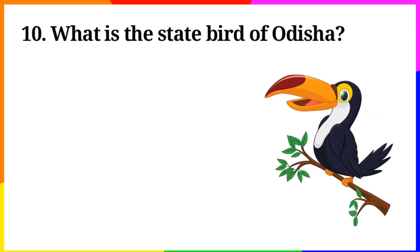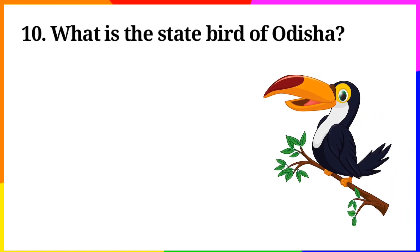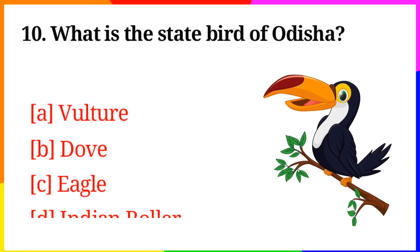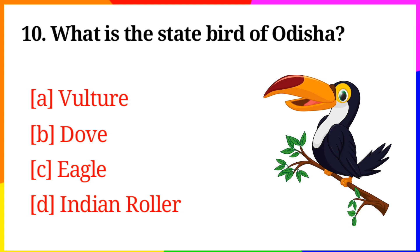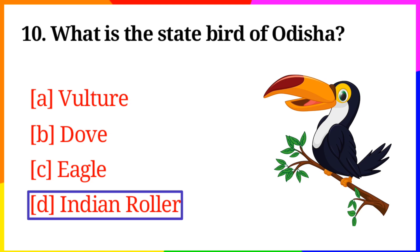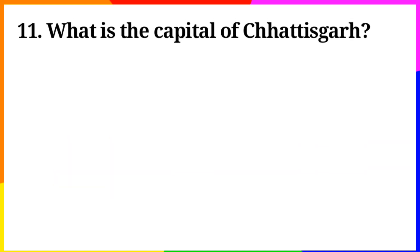Question No. 10: What is the state bird of Odisha? Option A: Vulture, B: Dove, C: Eagle, D: Indian Roller. Answer is Option D: Indian Roller.